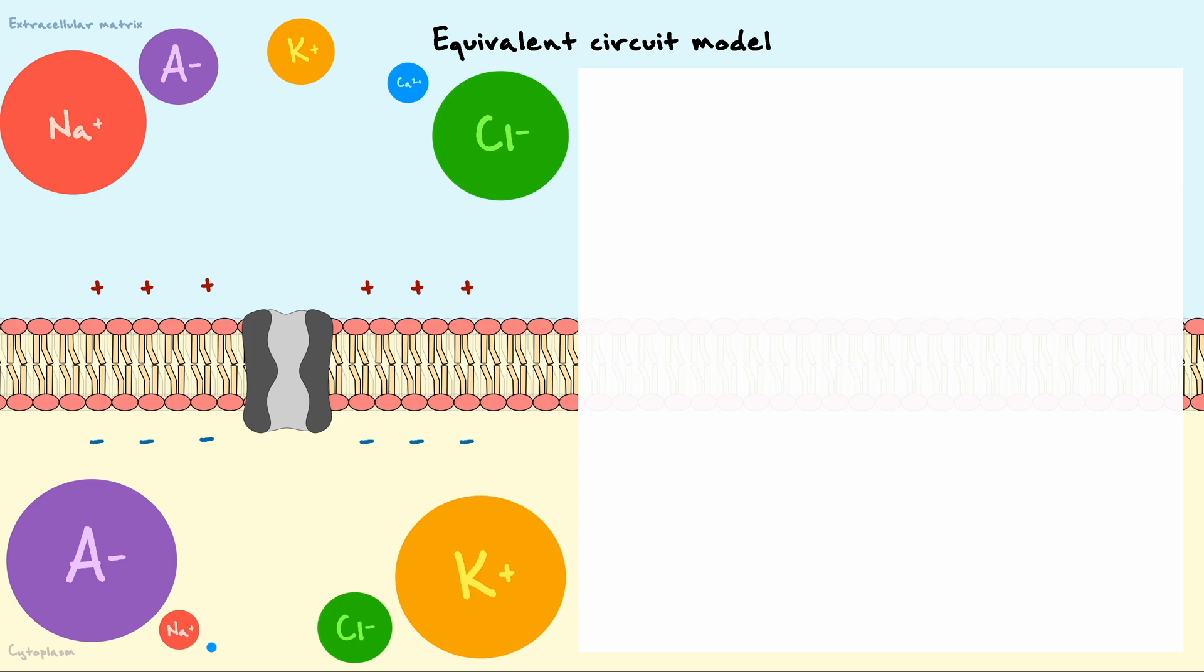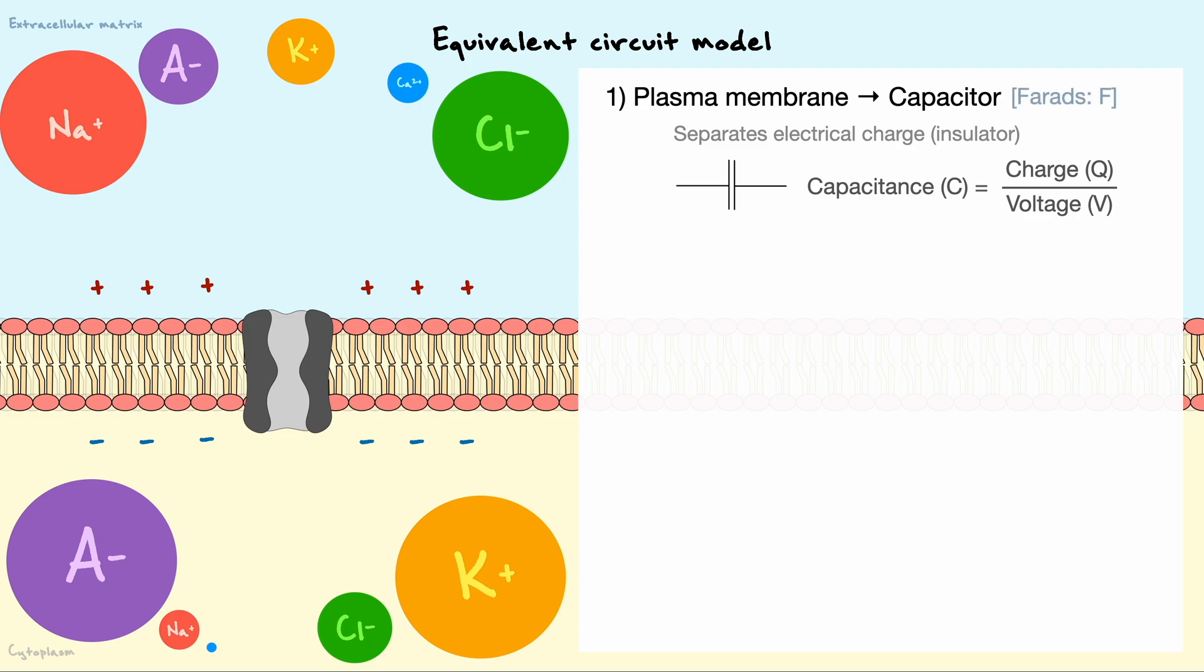Hence, we can consider the membrane as a capacitor, which is represented by this symbol in electrical circuits. The capacitance C generated by the membrane is equal to the stored charge divided by the voltage across the capacitor. The units for capacitance are farads, which are expressed as an F.